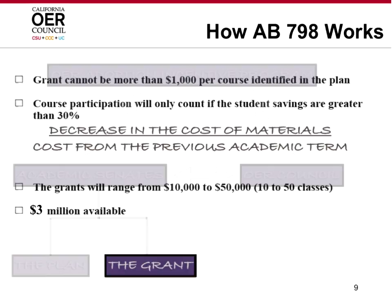Grants themselves cannot be more than $1,000 per course identified in the plan, and participation will only count if the student savings are greater than 30% — 30% or more from what the original cost of texts and materials were in the class. The minimum grant will be $10,000; colleges have to have at least 10 course sections. The maximum will be $50,000, so a maximum of 50 classes, and there is $3 million available to spread between the two segments — between the CSUs and the CCCs. As indicated by our remedial math instructor Barbara Olowski last week, theoretically if every college requests monies, there will be some colleges that do not get them.